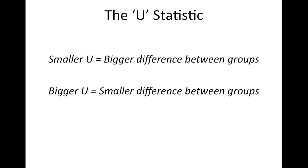Now, this is in contrast to the parametric T statistic, in which a larger T value means there is a bigger difference between the groups, whereas a smaller T value means there is a smaller difference between the groups.